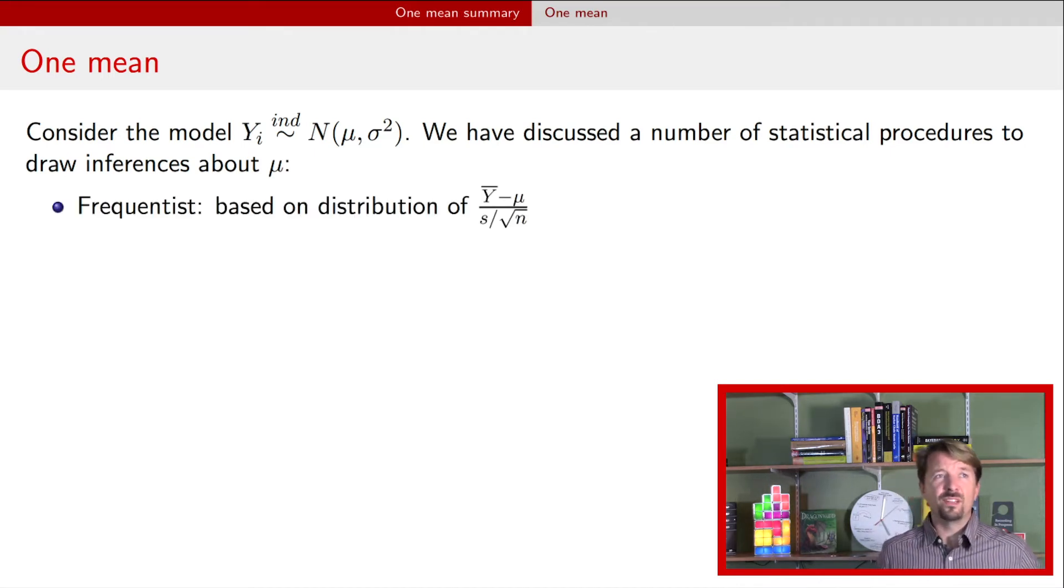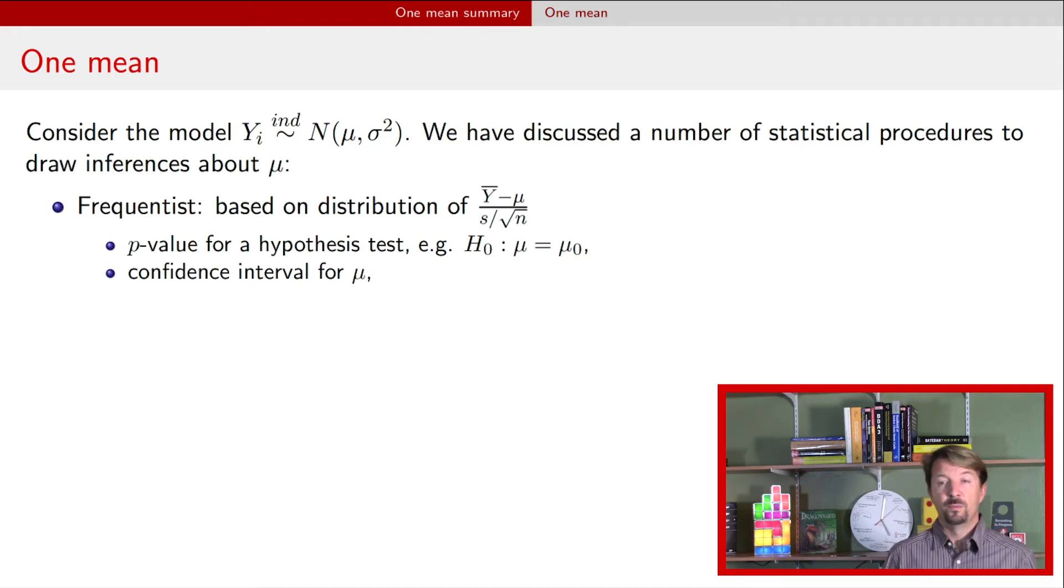Now if we talk about this mean, usually from a frequentist approach we're interested in the sampling distribution of this statistic right here which was the t statistic. We calculated p-values associated with particular hypothesis tests of the mean being particular values. We talked about constructing confidence intervals for that mean.